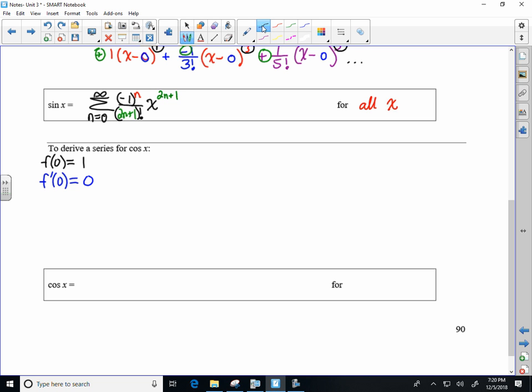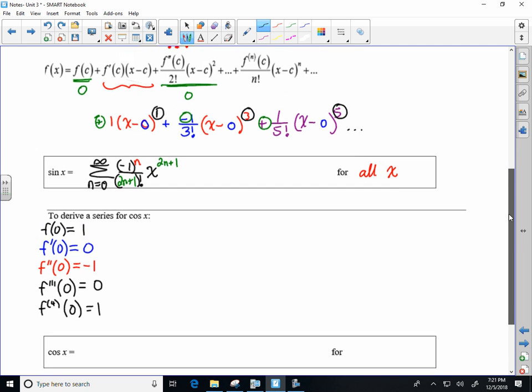So my first derivative of cosine, which is negative sine, at zero, negative sine of zero is zero because the sine of zero is zero. The second derivative would be negative cosine. So we're looking at a negative one. So long story short, it follows the same pattern, just it starts at a different place. So zero, then back to one.